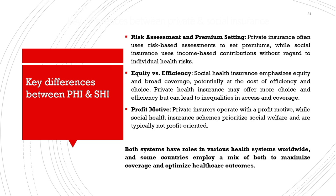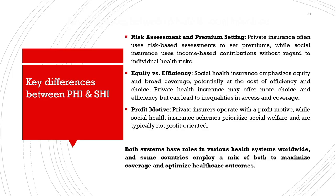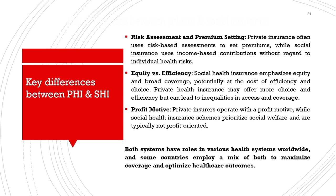Key differences include risk assessment and premium setting: private insurance uses risk-based assessments while social insurance uses income-based contributions. Private health insurance is competitive, with providers catering to different age groups and disease profiles. Social health insurance emphasizes equity and broad coverage potentially at the cost of efficiency. Private insurance may offer more choices but can lead to inequalities in access primarily due to income factors — people who are sicker but have low incomes may not afford private health insurance.